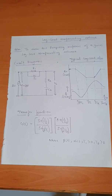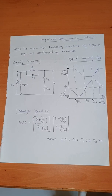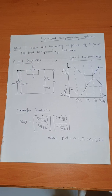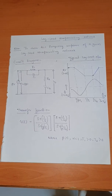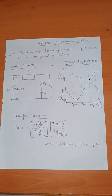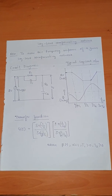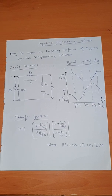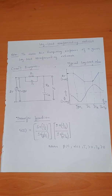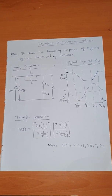Before that, what actually a compensator is? A compensator is a device inserted into the system for the purpose of satisfying certain specifications. You can consider a filter — a filter is also one type of compensating device inserted in a rectifier circuit because the output of the rectifier is not a pure DC, it is a pulsating DC. In order to get a pure DC, we use a capacitor as a filter, so the filter here is acting as a compensating network.